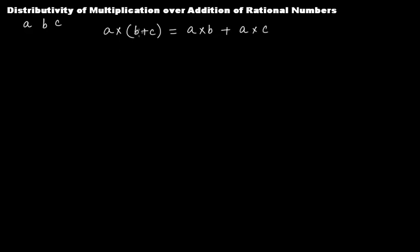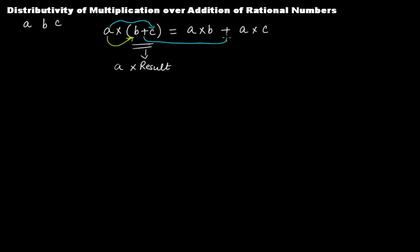That is, whether you first add b plus c and then multiply that result with a, or whether a multiplies with b first — that is a times b — and then a multiplies with c, giving a times c, and you add them. This will be equal, and that is what distributivity of multiplication over addition of rational numbers is.